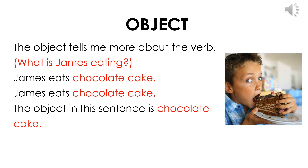Next we have the object. The object tells us more about the verb. For example, what is James eating? James eats chocolate cake — so the object in this sentence is chocolate cake. It is important to note that the object can be more than just one word.